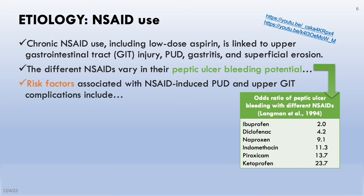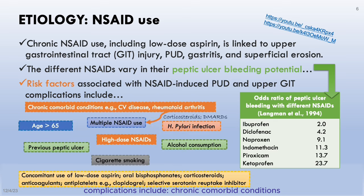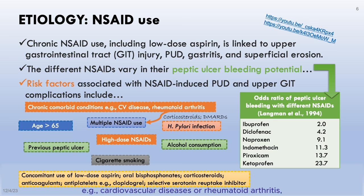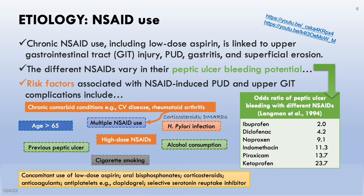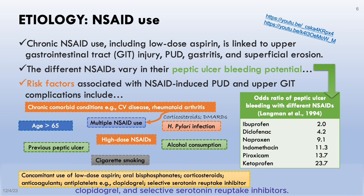Risk factors associated with NSAID-induced peptic ulcer disease and upper GIT complications include chronic comorbid conditions such as cardiovascular diseases or rheumatoid arthritis, multiple NSAID use, the elderly, high-dose NSAIDs, history of previous peptic ulceration, alcohol consumption, cigarette smoking, and concomitant use of low-dose aspirin, oral bisphosphonates, corticosteroids, anticoagulants, antiplatelets like clopidogrel, and selective serotonin reuptake inhibitors.